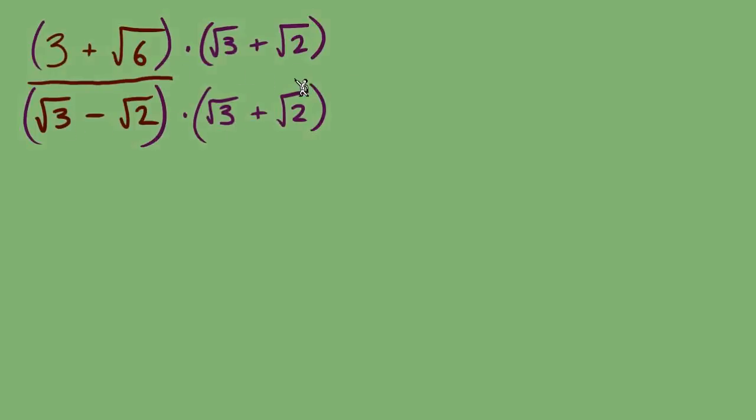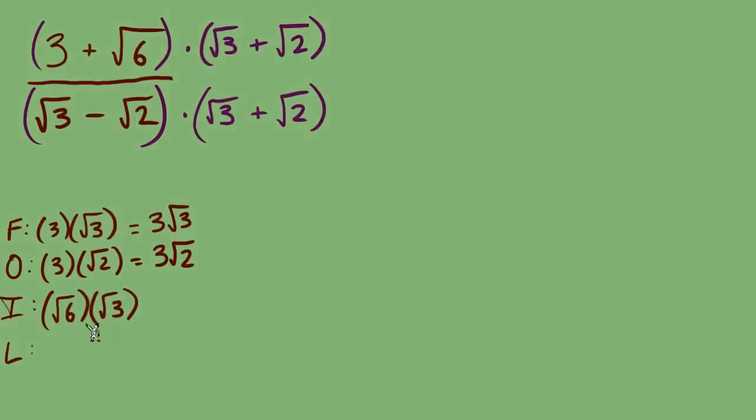Let's start with the numerator. First: 3 times radical 3, cannot multiply an outside with an inside, it's 3 radical 3. Outer: positive 3 times positive radical 2, 3 radical 2. Inner terms: radical 6 times radical 3, we can multiply those together, radical 18.